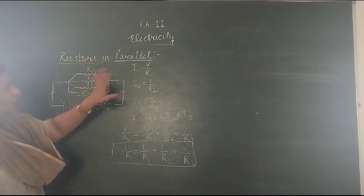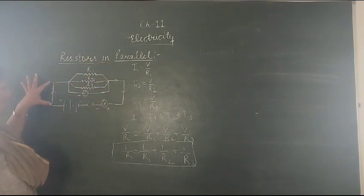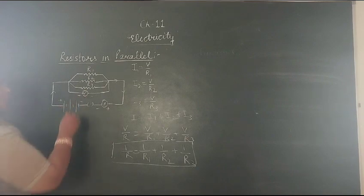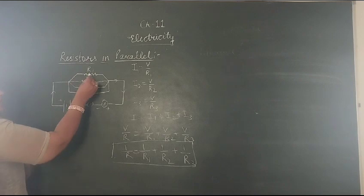These resistors are connected in parallel. In this diagram, we have represented how the resistors can be connected in parallel. There are three resistors R1, R2, and R3 which are connected in parallel.